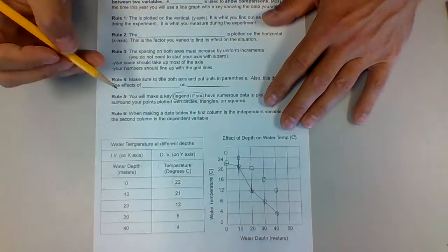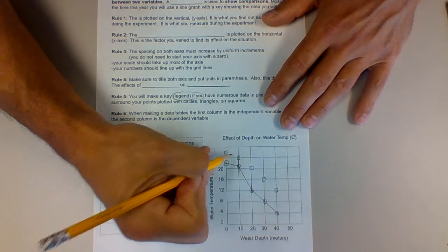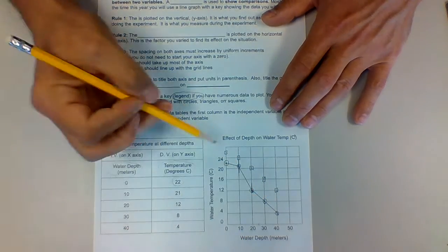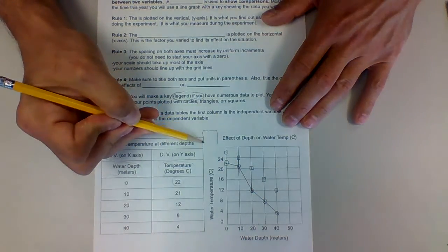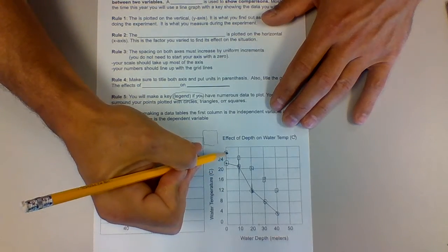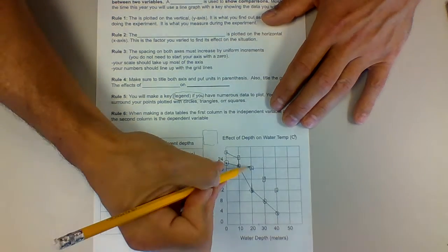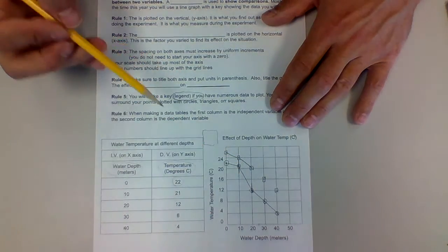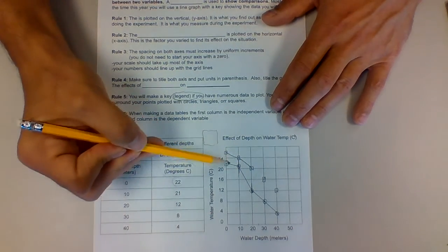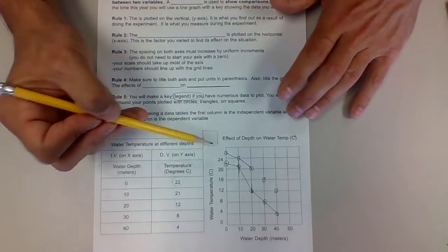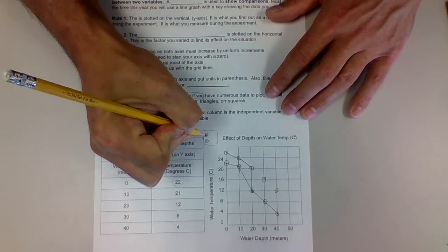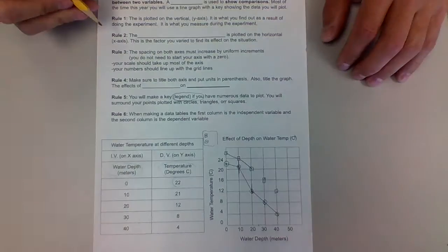And I could use different shapes to show that data. All right, and I would have a legend or key off to the side to indicate to the reader what that data represents. So you can use shapes, you can use colors, but you have to have a legend off to the side to tell you what that data represents.